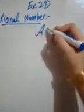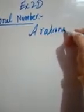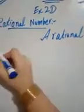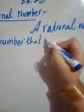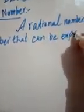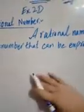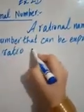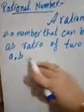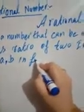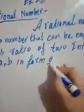A rational number is a number that can be expressed as a ratio of two integers — or the comparison of two integers. These integers are represented as a and b, written in the form a/b, or you can say as a fraction.